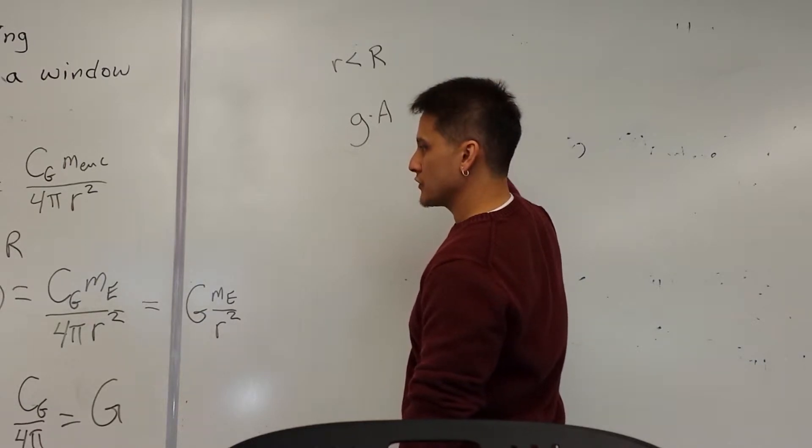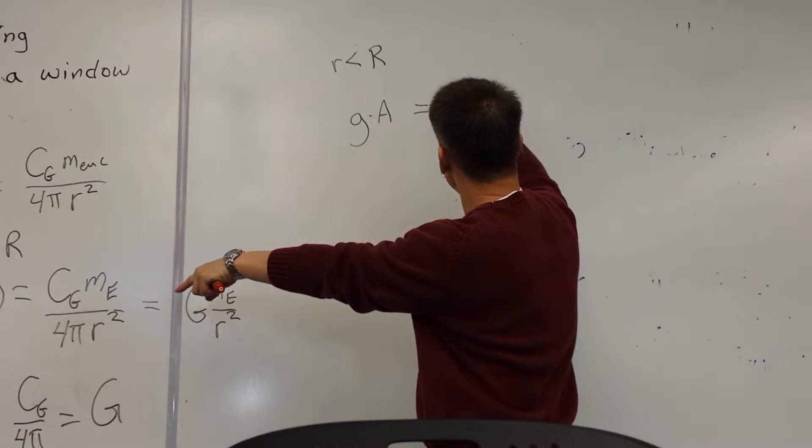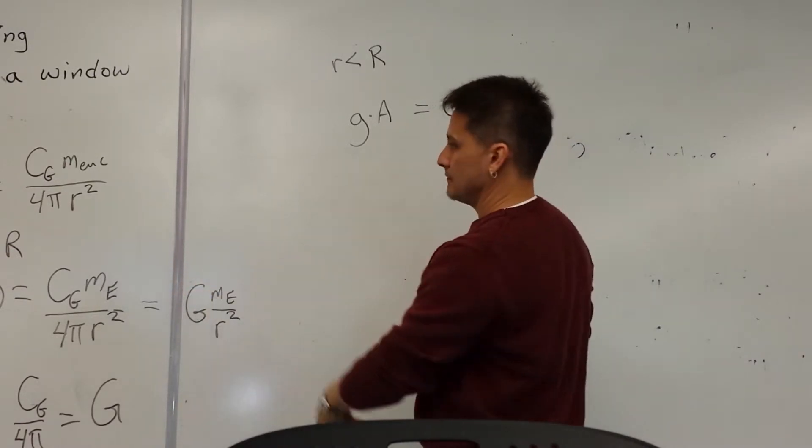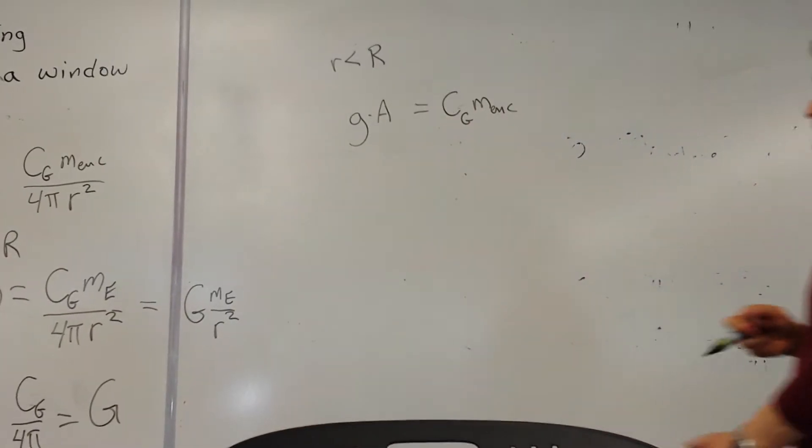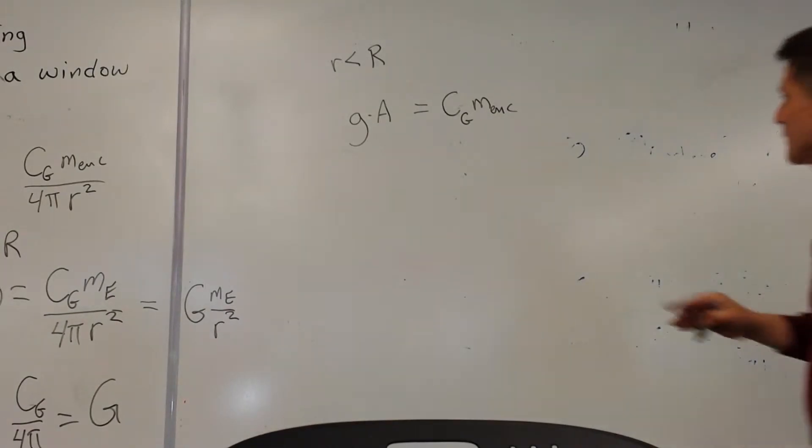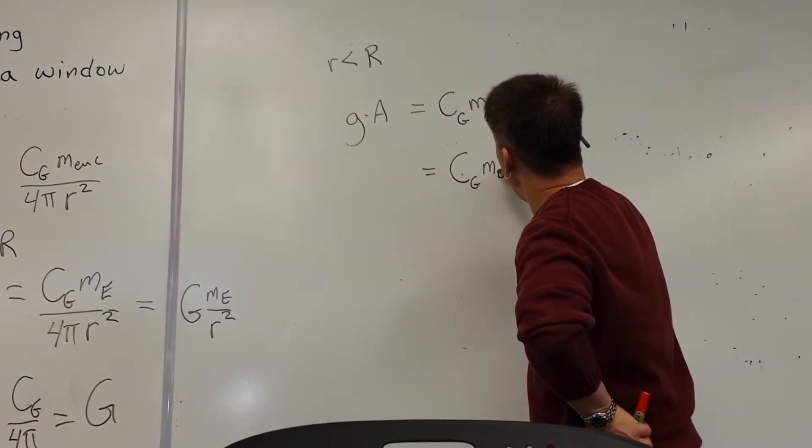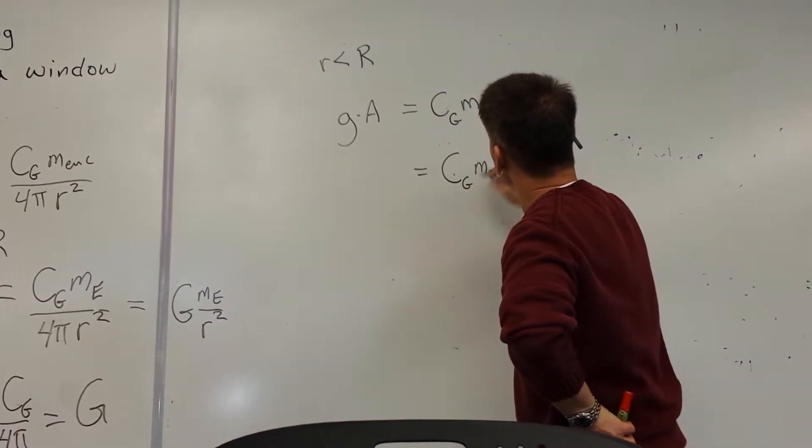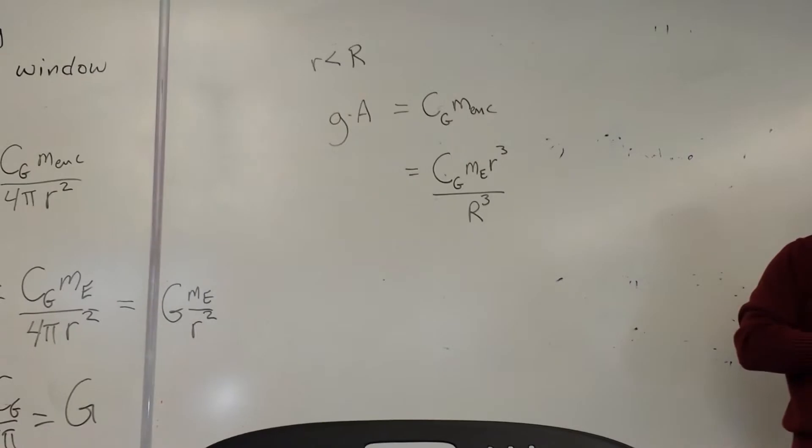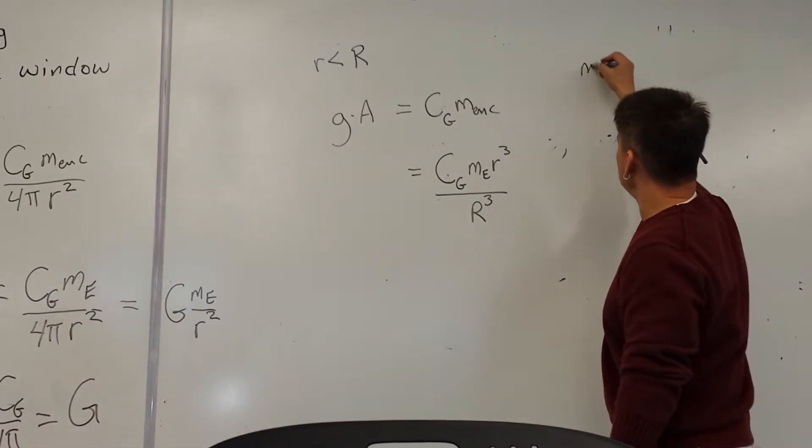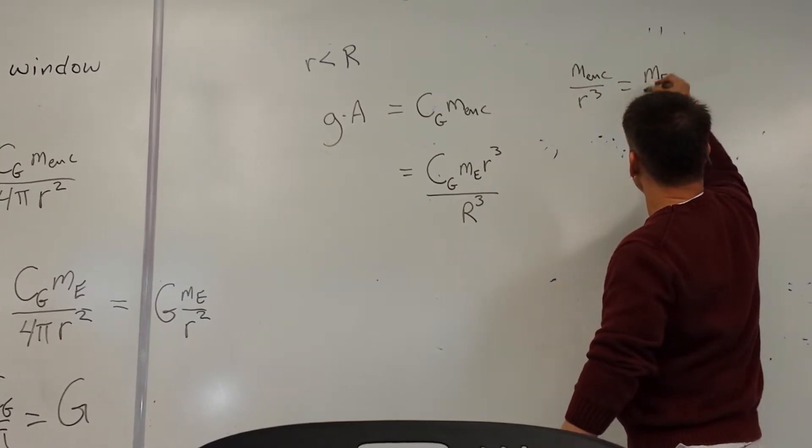Should be equal to, we play the same game, however we want to write it. So for now I'm going to leave it as C_G M_enclosed, not M_enclosed. Which should be C_G times the mass of the Earth times R³ divided by big R³. This assumption is that M_enclosed over R³ is M_E over big R³.